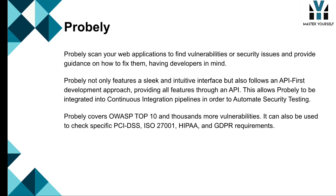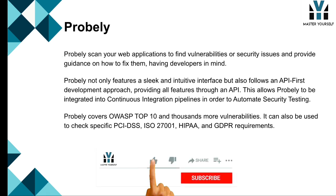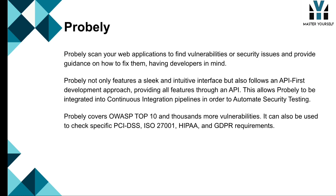Probely scans your web applications to find sustainability and security issues and provides guidance on how to fix them, with developers in mind. It features a sleek and intuitive interface and follows an API-first development approach, providing all features through an API. This allows Probely to be integrated into continuous integration pipelines to automate security testing. It covers OWASP Top 10 and thousands more vulnerabilities, and can also be used to check specific PCI DSS, ISO 27001, HIPAA, and GDPR requirements.